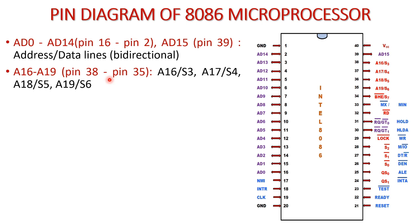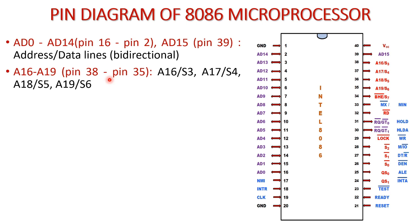A16 to A19 pins are from pin number 38 to pin number 35. These are A16, A17, A18 and A19. These pins are multiplexed with status signals — that is from S3 to S6: S3, S4, S5 and S6. These are known as both the status pins and the address pins.